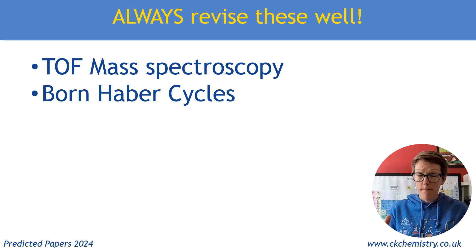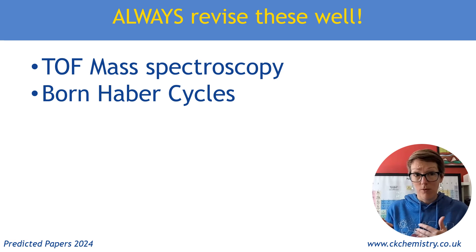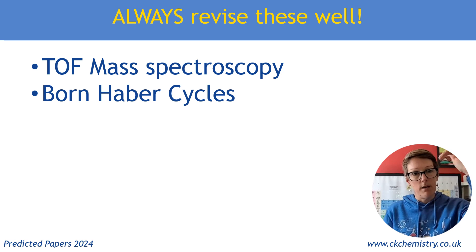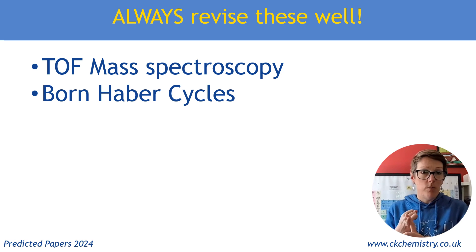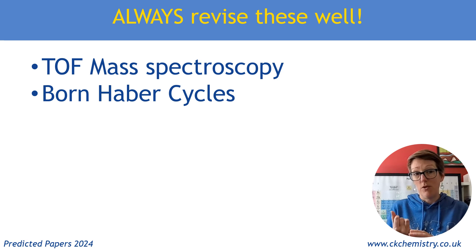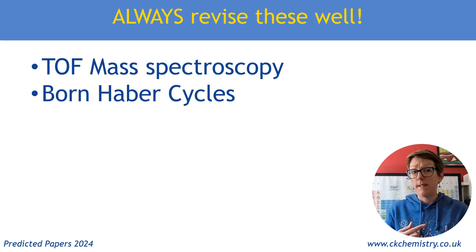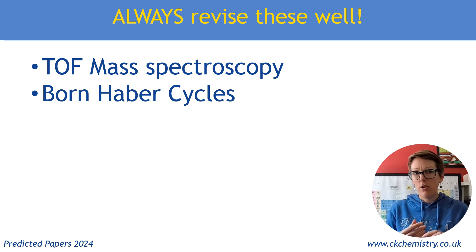Born Haber cycles are obviously going to come up. But because they're getting a little less predictable over the years, don't just rote learn that a Born Haber cycle goes up and down and just rote learn everything. Make sure that you can label those enthalpy changes confidently and specifically. Make sure that you can name them properly. Make sure that you can write equations for the separate enthalpy changes — i.e. atomization, ionization, electron affinity, lattice energy. Make sure that you can confidently write balanced equations and know your definitions.